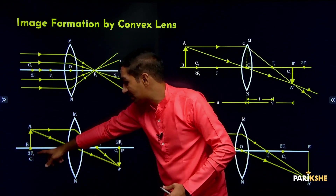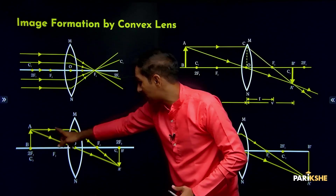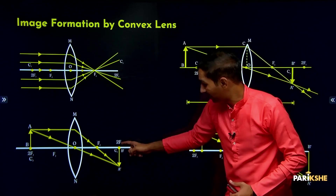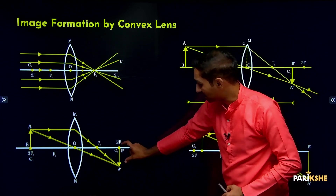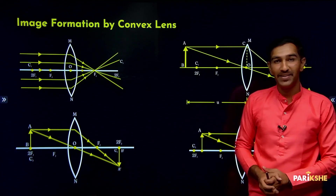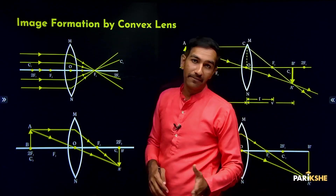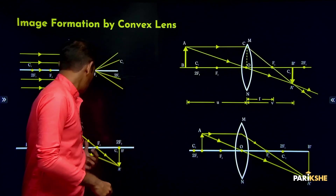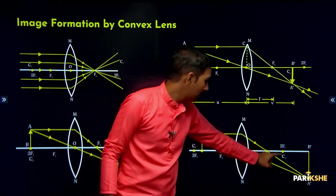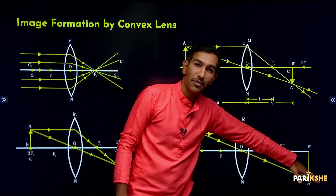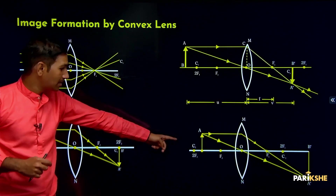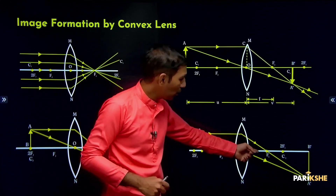Third case: object exactly at 2F1 — image will be formed at 2F2. The image is real and inverted, same size as the object, and position of the image is at 2F2. Fourth case: object between 2F1 and F1 — image forms beyond 2F2. The image is real and inverted, size is enlarged, and position is beyond 2F2.